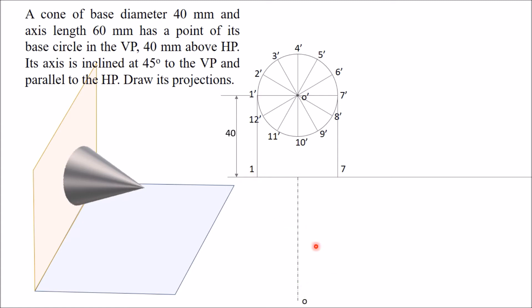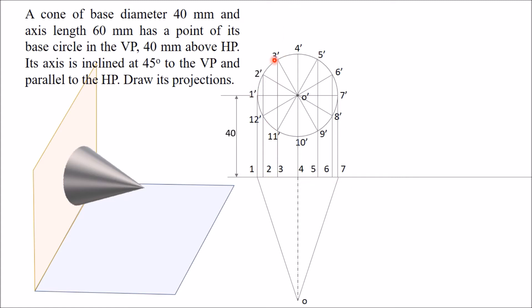Join point 1 to O and point 7 to O. To draw the other generators, project all the remaining points: 2, 3, 4, 5, 6. Note that points 2 and 12, 3 and 11, and so on appear at the same place. When viewed from the top, only visible points are 1, 2, 3, 4, 5, 6, and 7, while points 12, 11, 10, 9, and 8 are invisible. Join all these points to O to form the generators.